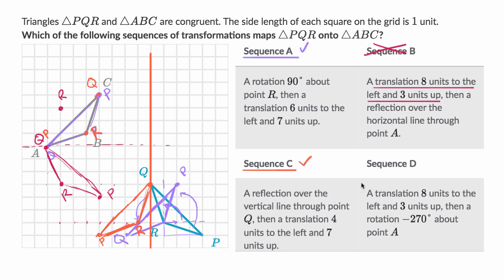And then last but not least, let's try sequence D — I'll do that in black. First we do a translation eight units to the left and three up. So starting with Q, eight to the left and three up — I'll put my black Q right over there. And then R, eight to the left and three up — I'll put my black R right over there. That's actually exactly what we did in sequence B the first time, so P is going to show up right over there. So after that first translation in sequence D, it gets us right over there.